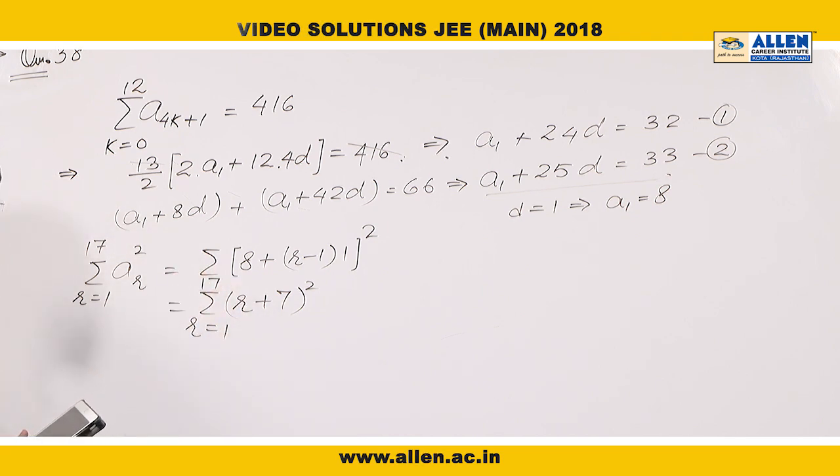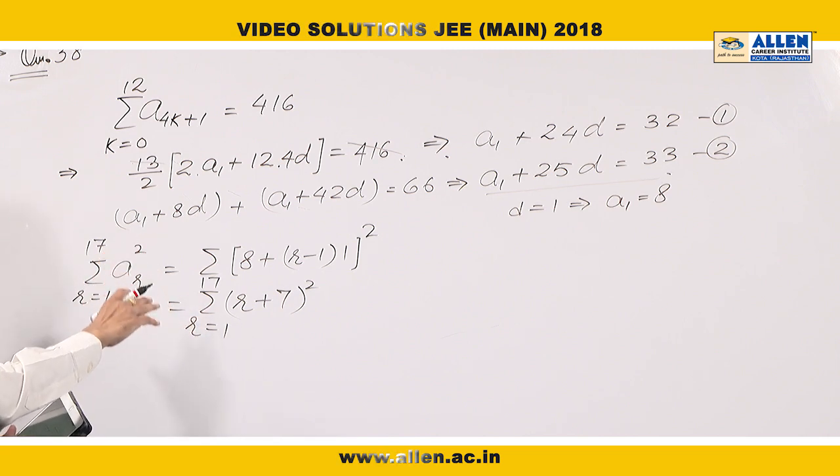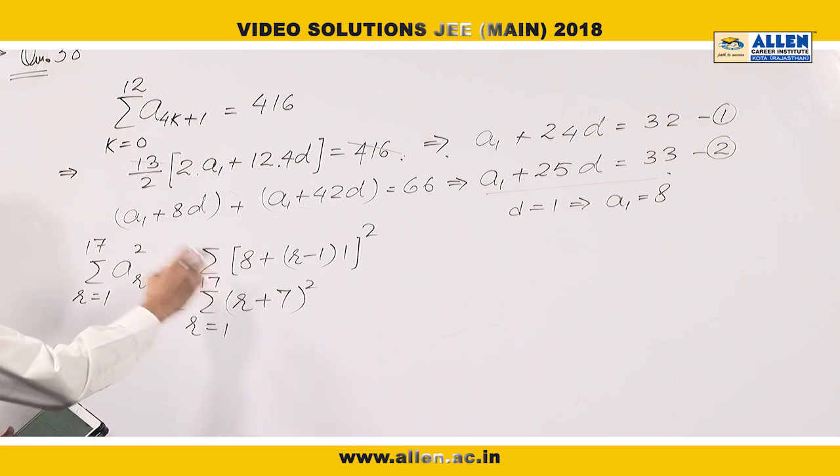This equals (r+7)² summation where r is from 1 to 17. At r equals 1, this will be 8². So we are calculating the sum of squares of the natural numbers 8 to 24.